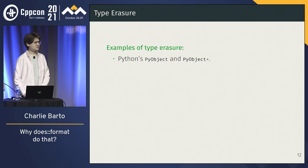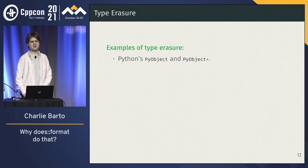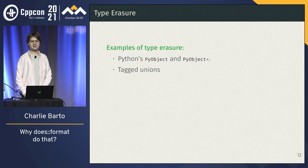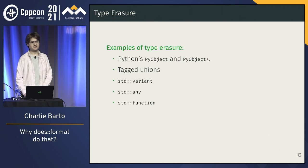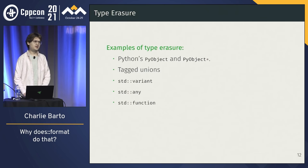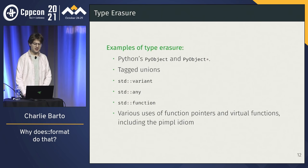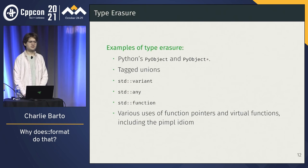There are different ways to do type erasure. The standard library has a bunch of them. Scripting languages basically have a standardized way — PyObject is just a tagged union. You see that in Python, Ruby, and similar languages. The standard has std::variant, std::any, std::function, and various other types that involve erasure. Variant and any are the two most direct. There are also lots of uses of virtual functions. If you've ever used the pimpl idiom, it's the same idea — you're making it so the compiler doesn't have to know as much about your code.